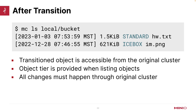The object tier is provided when you're listing objects — doing an MC LS will show me what tier the object is currently living on. I can see 'standard' for hw.txt and then 'icebox' for the image PNG, which has been transitioned because it was older than the threshold. All changes happen through the original cluster and through that local alias. If I go out and try to do an LS on my icebox directly, I won't see the filename — I'll see a series of random digits and hash codes.